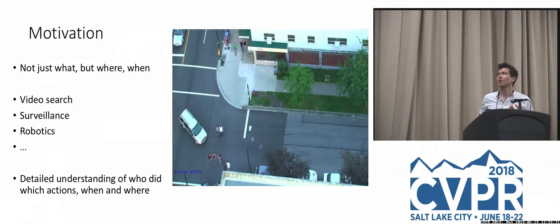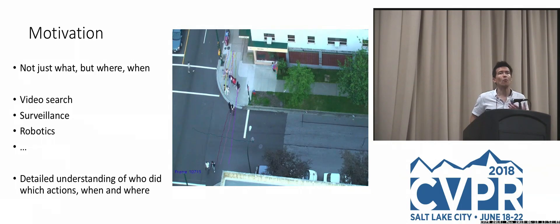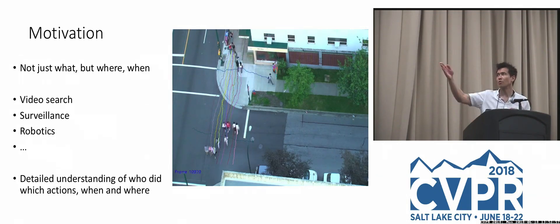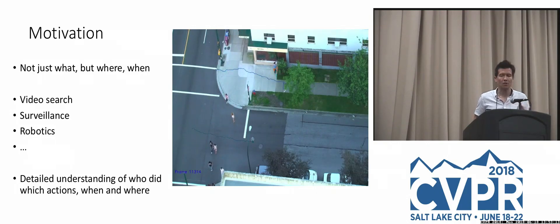The motivation for spatial-temporal action localization: in a surveillance video of a crosswalk, we want to know which people are walking together, whether they crossed paths, whether they came near cars, and measure things like time to collision. We also want to know how long a person has been standing and what they have been doing. This detailed understanding — where are the people, what are they doing, and for what duration — is what spatiotemporal action localization means.